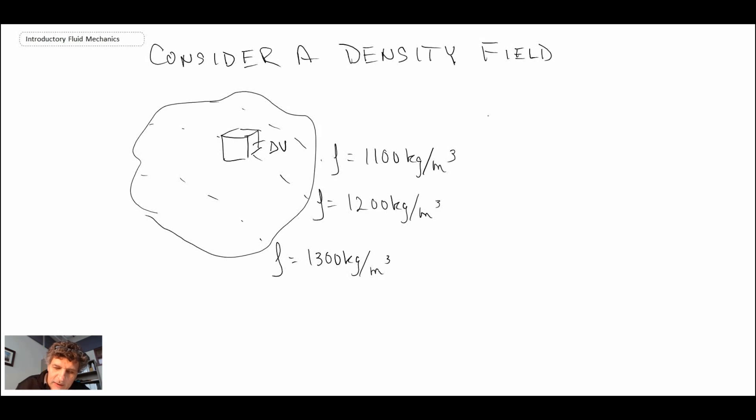If we were to plot density as a function of delta V, we have rho in kilograms per meter cubed and delta V down here. If we were to plot that, what we would find is that when delta V is really, really small...